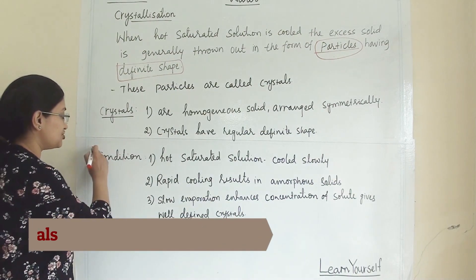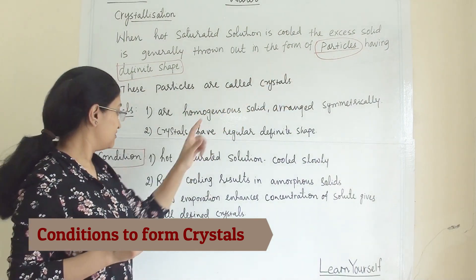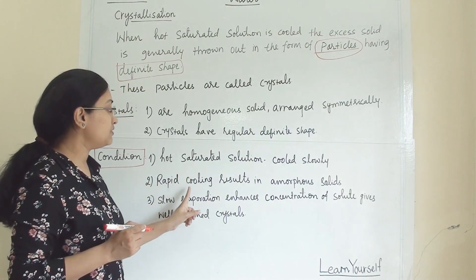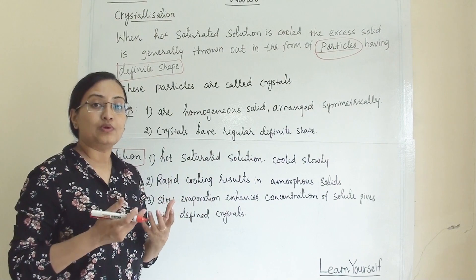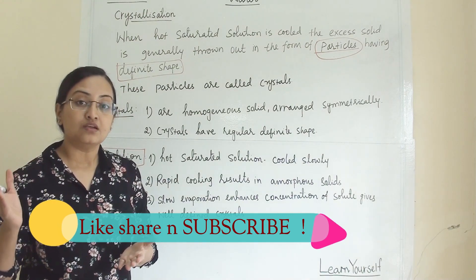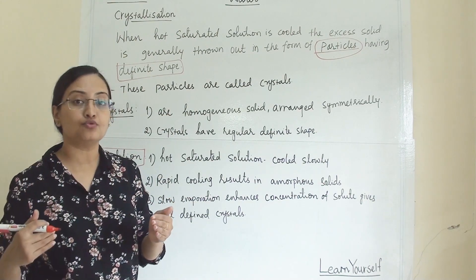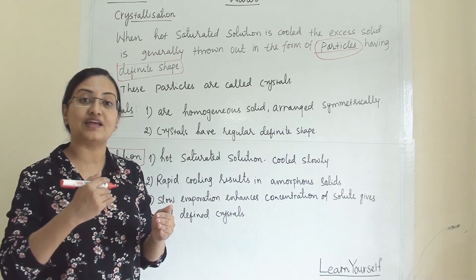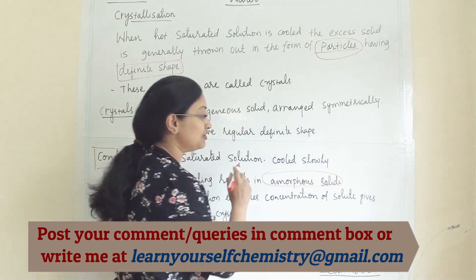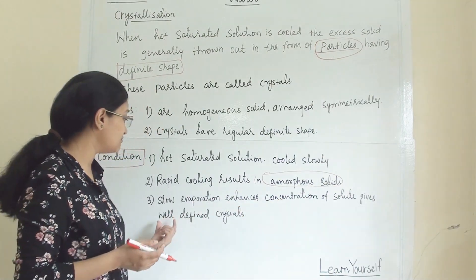Now what are the conditions we have to follow while forming crystals? First, the hot saturated solution should be cooled slowly. Second, rapid cooling results in amorphous solids. When you have a hot saturated solution, you cannot put it in an ice bath and cool it rapidly — it has to come down to room temperature on its own, gradually and slowly. Rapid cooling will give us amorphous solids, not crystals. Slow evaporation enhances the concentration of the solute and gives well-defined crystals.